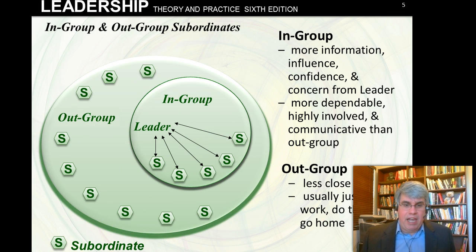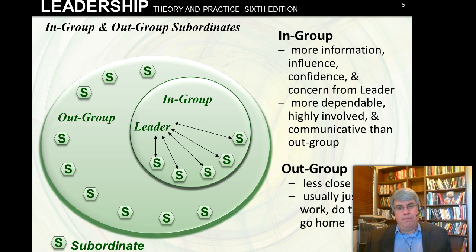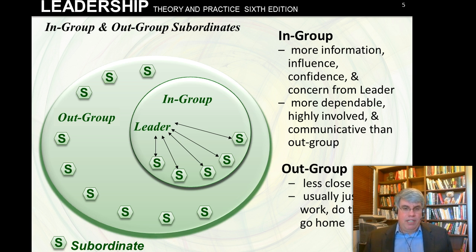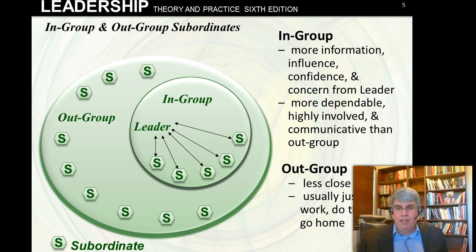Here's another way of looking at the in-group and the out-group. We've got the one leader and a bunch of subordinates. The leader has real positive, frequent, encouraging interactions with one group — considered the in-group. The others get less interaction, it's less positive, they're less close, they just come to work to get their job done, and the leader gives them the minimum amount of information — this is the out-group. For the in-group, they're closer to the leader, have more information, and there's greater confidence. Research indicates that the in-group becomes more dependable, more involved in work, and more communicative than people in the out-group.